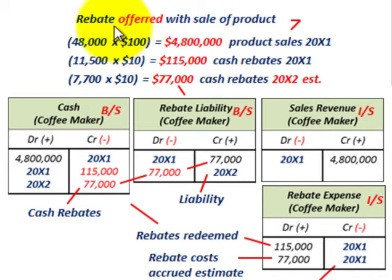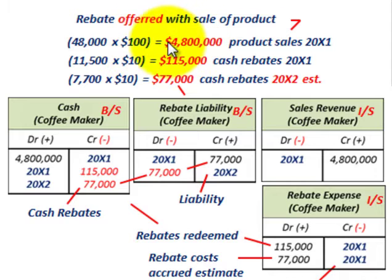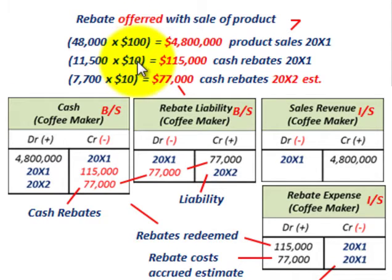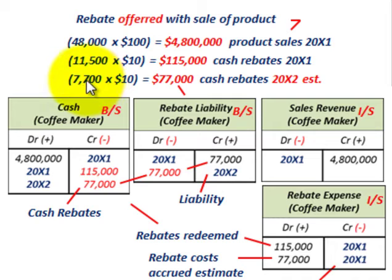Now let's look at how we'd record this. For product sales in 20X1, 48,000 coffee makers were shipped to retailers at $100 each, giving us product sales of $4,800,000. For cash rebates in 20X1, 11,500 rebates were sent back at $10 each, equaling $115,000 in cash rebates for the first year. The remaining estimated rebates — 7,700 × $10 = $77,000 — are the estimated cash rebates for 20X2, assumed to be returned in the following year.